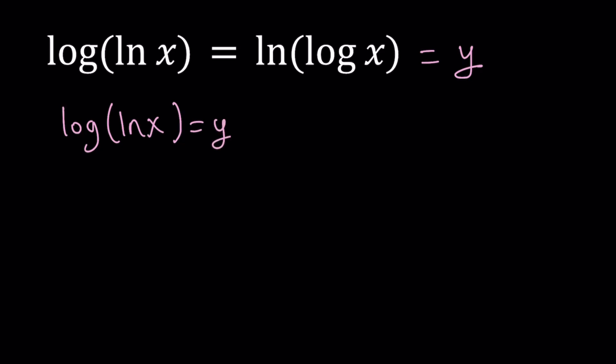Log ln x equals y, and this implies since our base is 10 here, it's not written, this gives us ln x equals 10 to the power y. Since we are trying to get x in terms of y or y in terms of x, we want to isolate, obviously in this case, we want to isolate x. We need to do e to the power of both sides. And since the base is e here, this gives us x equals e to the power 10 to the power y.